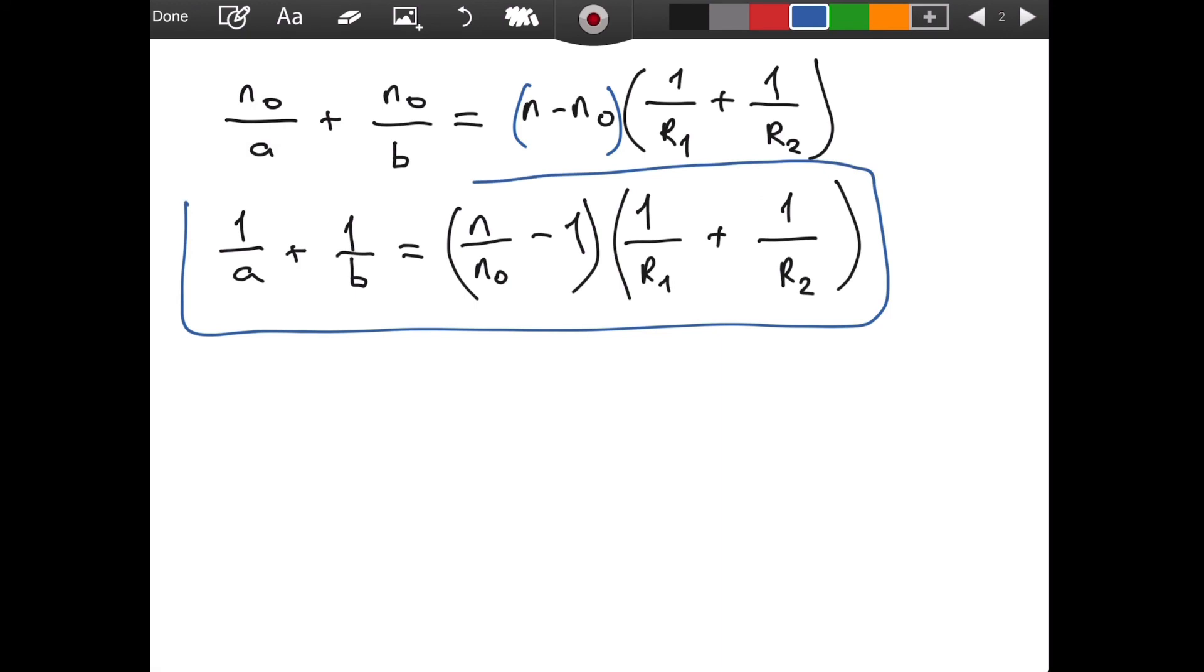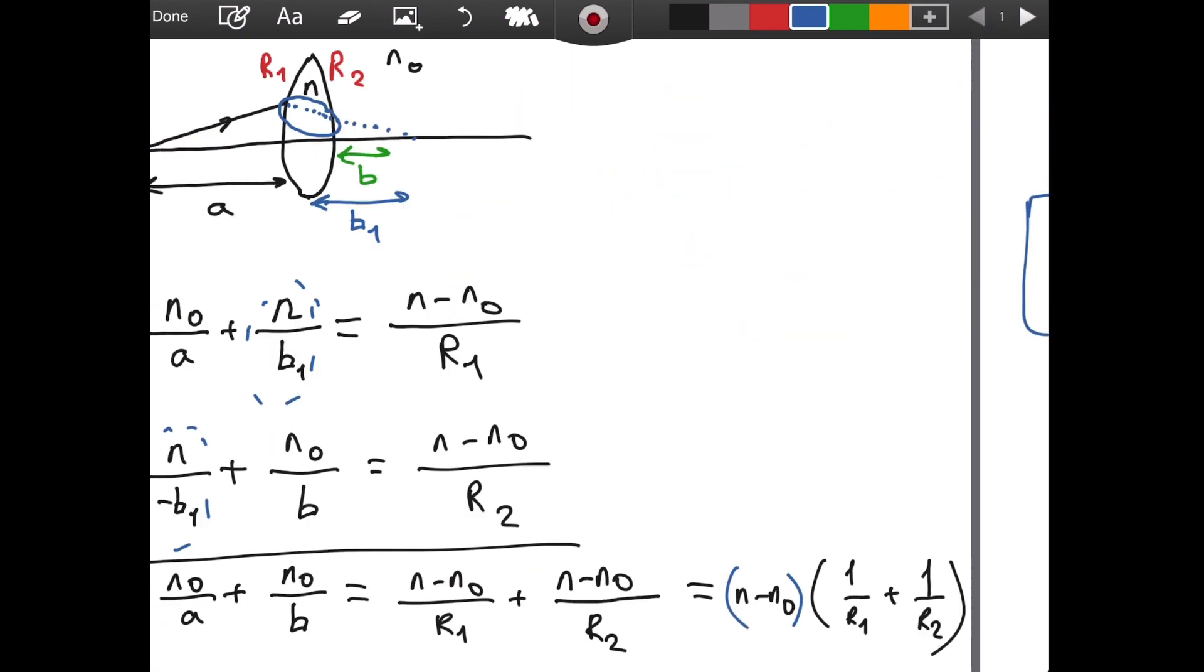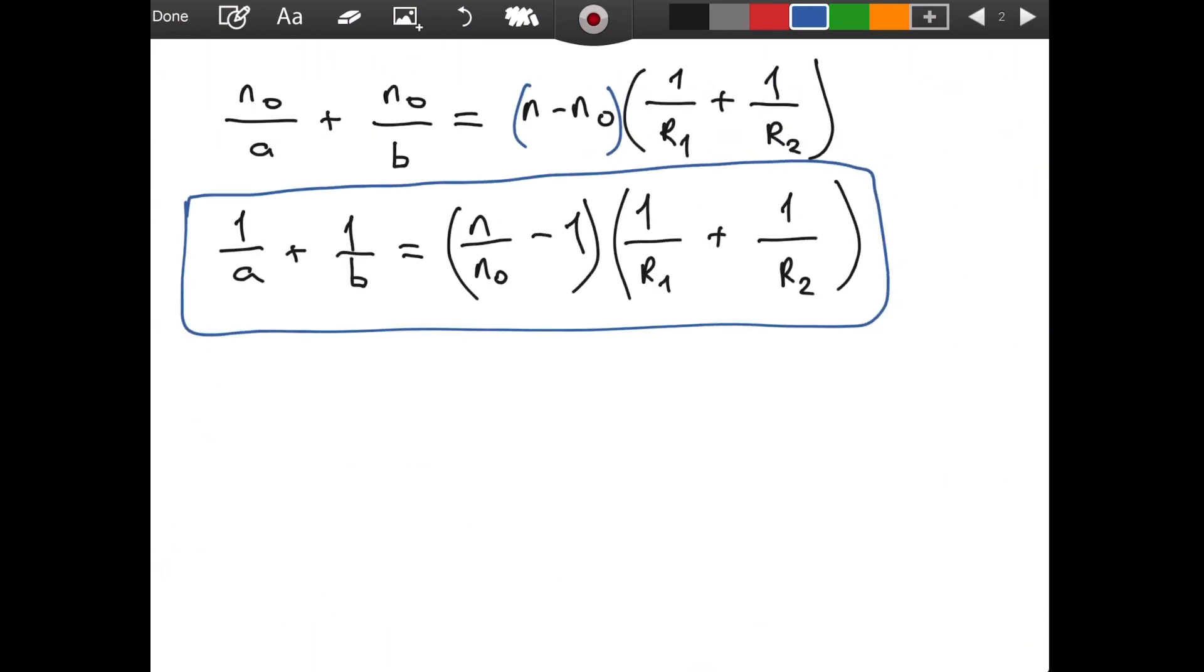Thin means that we assume this distance, d, the thickness of our lens, to be very small. It is small relative to other distances that we are dealing with. And, this is a good approximation. Because, in real life, your a and b values are very, very likely a lot greater than the thickness of the lens that we are using.